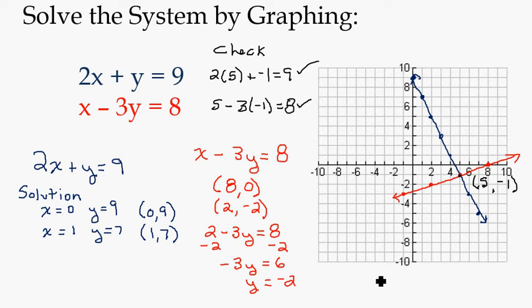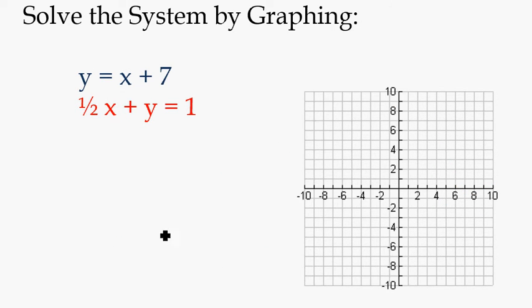So let's just try one more for practice. If you want to pause the video and try this one on your own, you could do that. And I will work through it here. So this first equation, I put this one in slope-intercept form already just to practice. So on this equation right here, the slope, which we denote with the variable m, is 1 because there's a 1 in front of the x. And the y-intercept is right here at 7. So it's going to go through the point 0, 7.